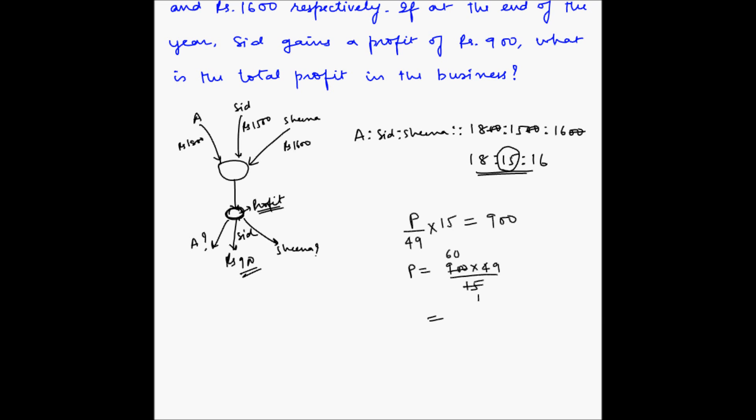Six nines are 54, five carry over six fours are 24 plus five 29 and one zero. So the total profit is 2,940 rupees.